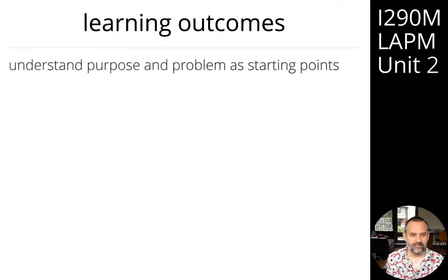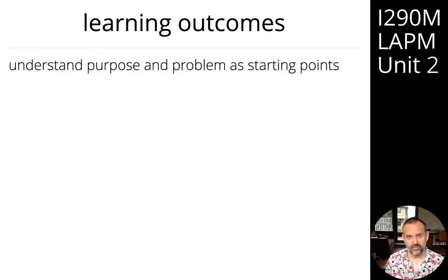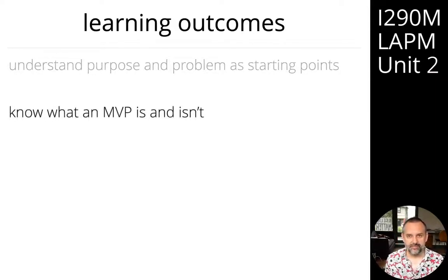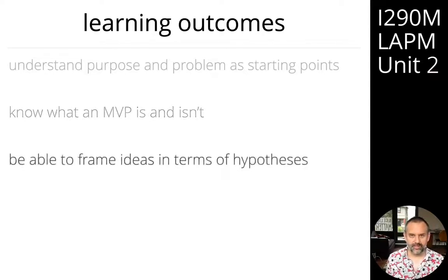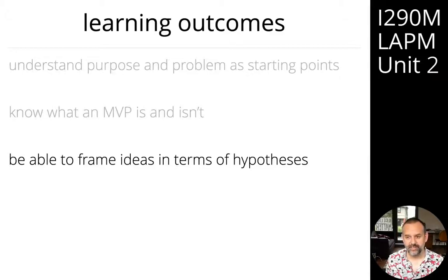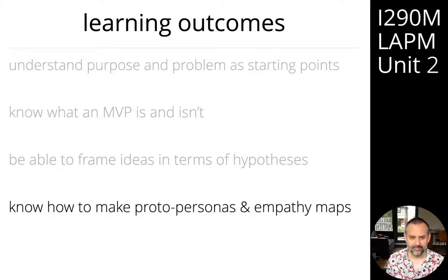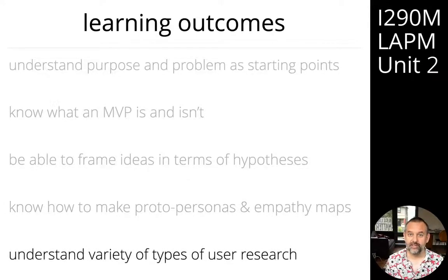In this unit, we're going to talk about purpose and problem as starting points — purpose being what problem are you trying to solve as an organization, and problem being the problem we're trying to solve for our customers and users. We'll cover MVP (minimum viable product), what it is and what it isn't, framing ideas as hypotheses that we validate, and tools like proto-personas, empathy maps, and canvases. We'll also discuss the different kinds of user research and how we can use those in discovery.